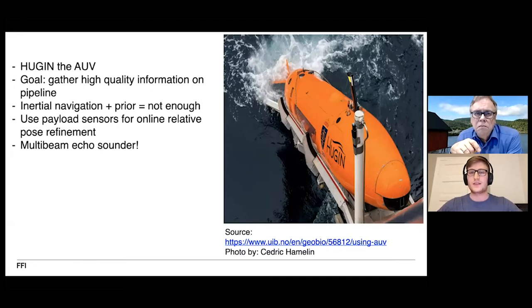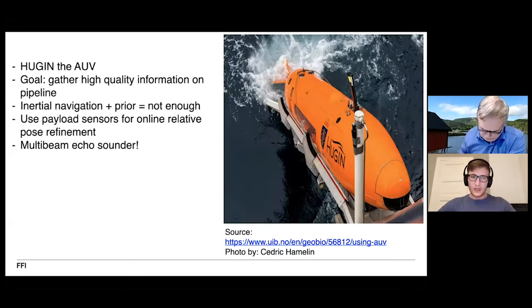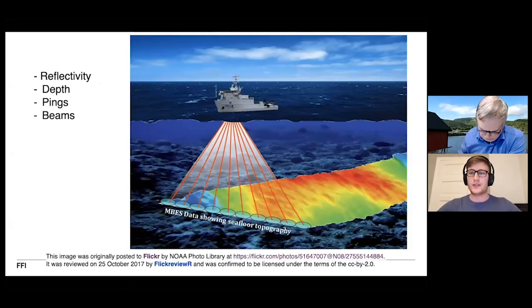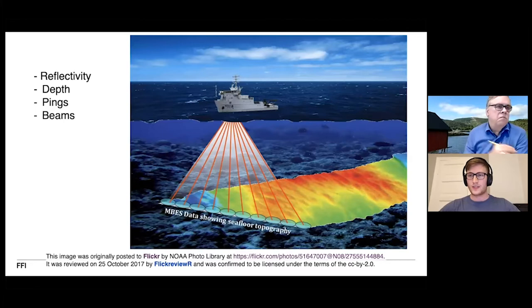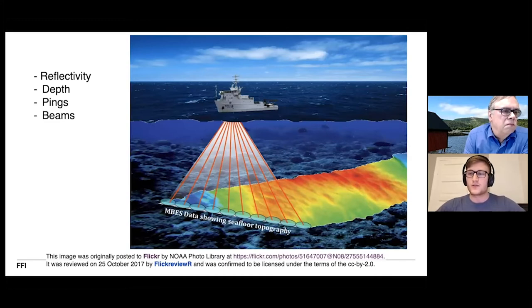Hugin has several such payload sensors for mapping out its surrounding seafloor, specifically the side scan sonar, an optical camera and a multibeam echo sounder. In our work we have restricted ourselves to looking at the multibeam echo sounder. There are four quantities I want to quickly go through from this sensor. Specifically you have two spatial dimensions corresponding to the along track and across track of the AUV which are the pings and beams respectively.